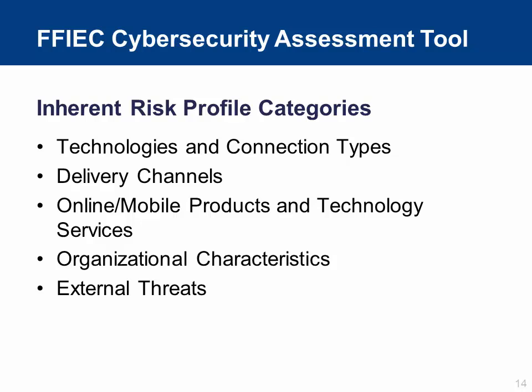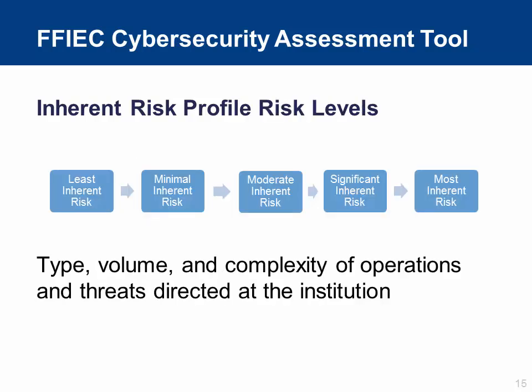To complete the assessment, management first assesses the institution's inherent risk profile, which is based on five categories: technology and connection types, delivery channels, online mobile products and technology services, organizational characteristics, and external threats. Within each of these five categories, there are activities, products, and services that an institution may assess according to risk levels, from least risk to most inherent risk. The inherent risk profile provides a risk description for each activity, product, or service according to the type, volume, and complexity of the institution's operations and threats directed at the institution.